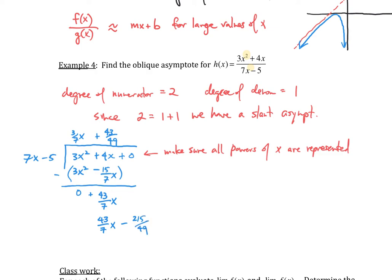And now I've got to subtract these guys. So I'm going to put parentheses around there. I'm going to subtract. And when I subtract, I'm going to get 0. I distribute the negative so it becomes plus 215 over 49.